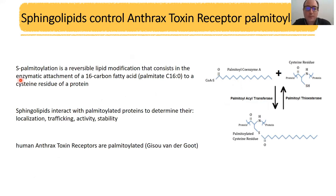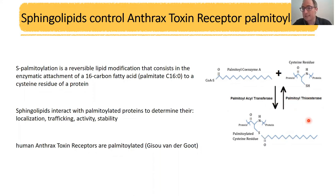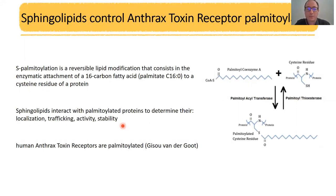What is palmitoylation? Palmitoylation is a post-translational modification of proteins where a cysteine in the protein gets modified with a palmitate. This is reversible — you have the PATs, the palmitoyl acyltransferases, which put the palmitate on the cysteine, and then you have the APTs, acyl protein thioesterases, which remove the palmitate again. There are many studies already showing that sphingolipids interact with palmitoylated proteins, changing their localization, their trafficking, their activity, and stability.